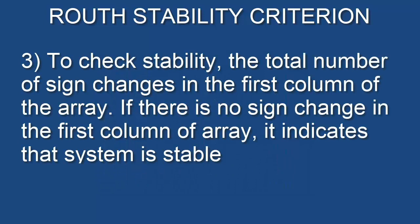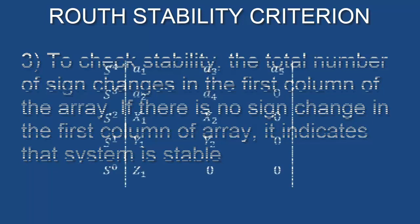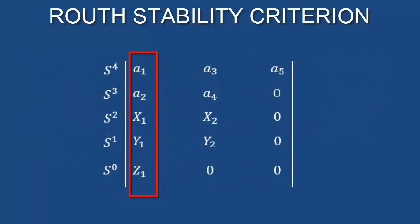Step three: to check stability, determine the total number of sign changes in the first column of the array. If there is no sign change in the first column of the array, it indicates that the system is stable. In other words, all elements in the first column should be greater than zero. This condition will be used to determine the critical value of gain and, corresponding to it, the period of sustained oscillation. In this way, Routh-Hurwitz will be useful in calculating the parameters required for the Ziegler-Nichols tuning method.